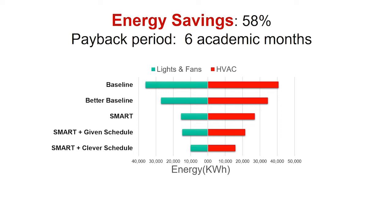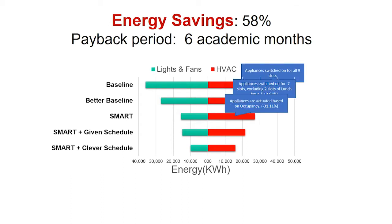All of this put together gives us a fairly large energy saving. This is for lights and fans, this is for HVAC. That is heating, ventilation, and air conditioning. This is a baseline. This is when seven hours continuously the room is occupied. The room is climate controlled and lights and fans are on. It used to be the case. Now, we have better baseline if you turn off the air conditioning and other things during the lunch time. A smart one, which has some of the components of the solution. If you take a given schedule, you get this. And if you get a clever schedule by moving the meetings around, you get something like this. All of this can add up to a savings of 58%. And that is about six academic months of payback time. Very impressive, I think. We have been able to repeat this in other places also, including auditoria and my lab.